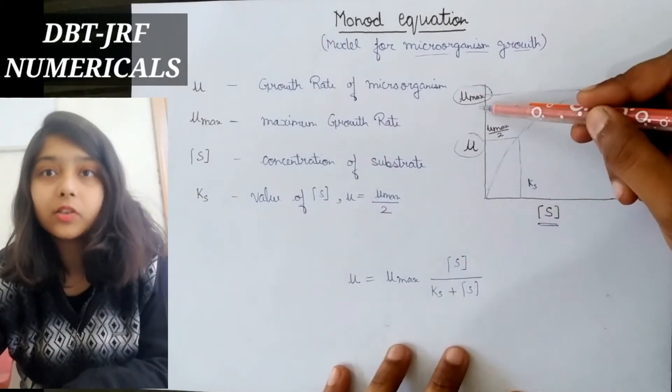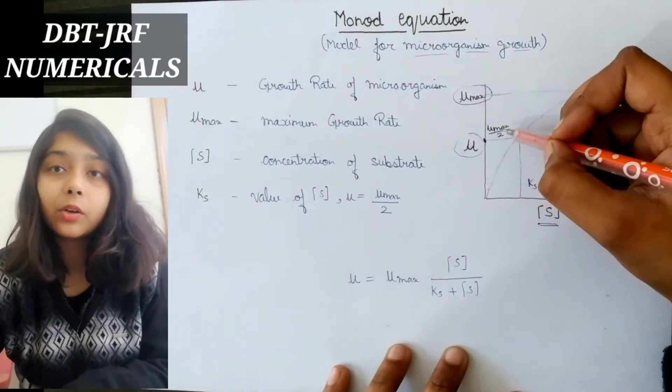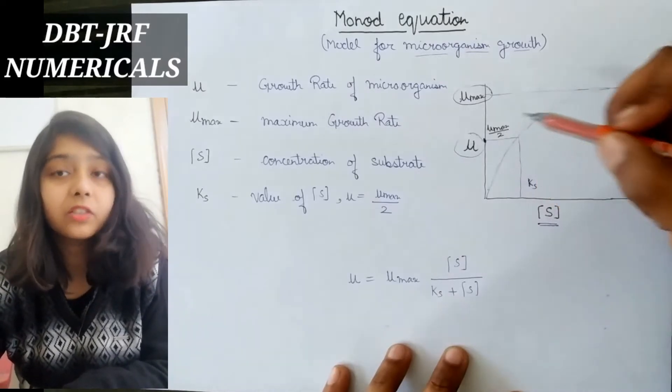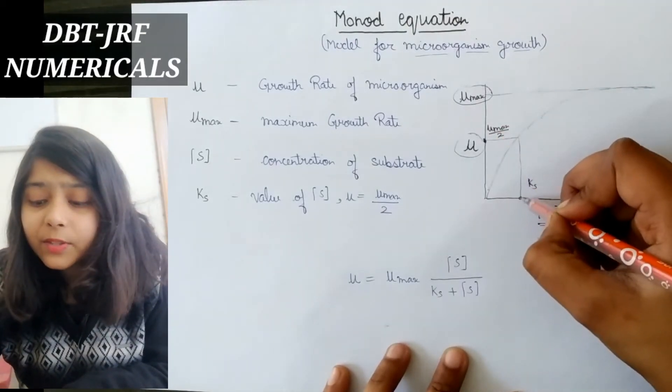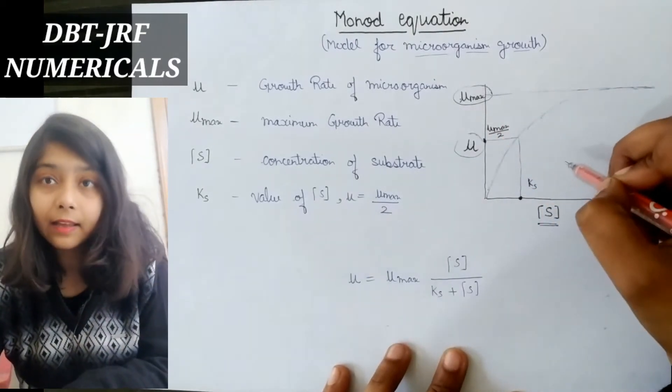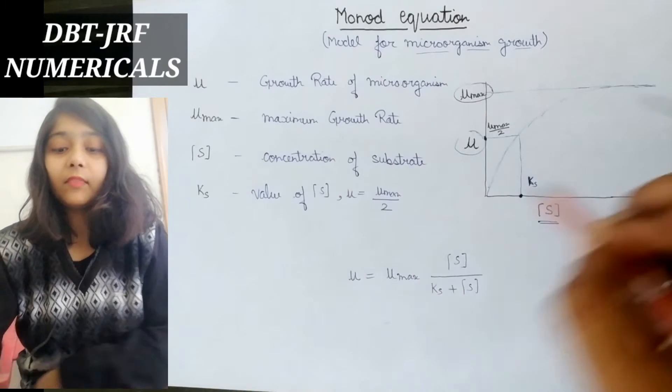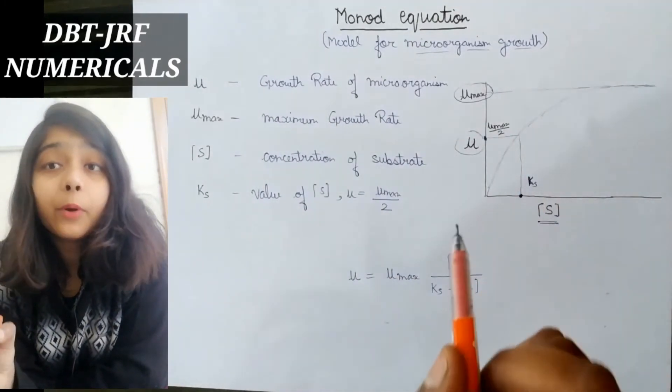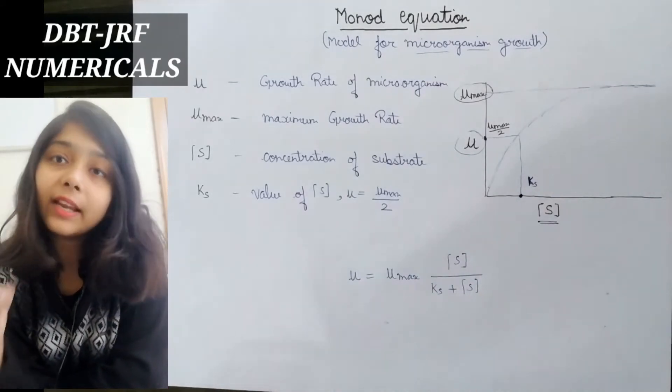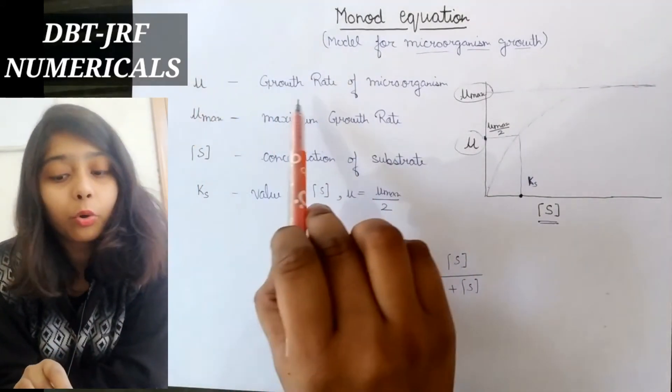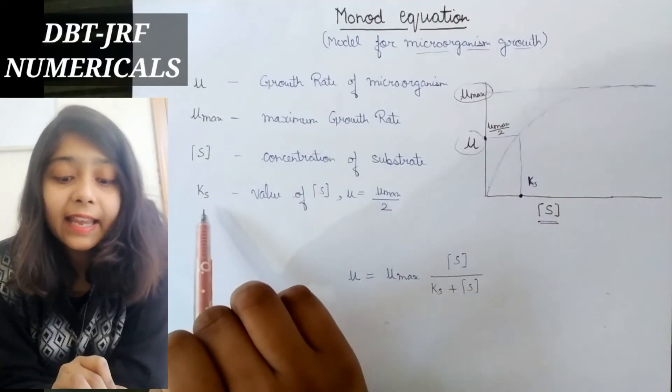In between is the maximum growth rate. When the growth rate of microorganisms was half the maximum, the substrate concentration at that point is called ks. So we have four parameters: mu is growth rate of microorganism, mu max is maximum growth rate, substrate concentration S, and ks is the substrate concentration when growth rate is half the maximum.